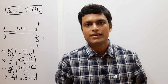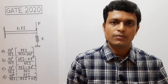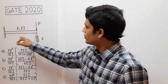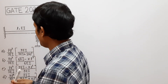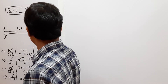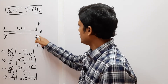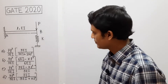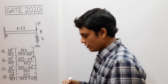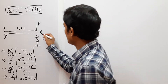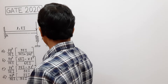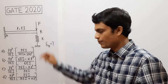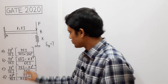Hello everyone, welcome to GATE mechanical lecture classes. In this lecture we are going to solve a problem from GATE 2020 on deflection of beams. This is a cantilever beam A-B. At end B, the beam is attached with a spring of stiffness K and one transverse load P is applied. We have to determine the transverse deformation at point B, that is delta B. Four options are given.